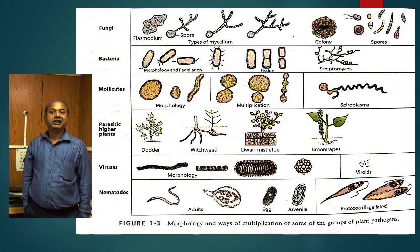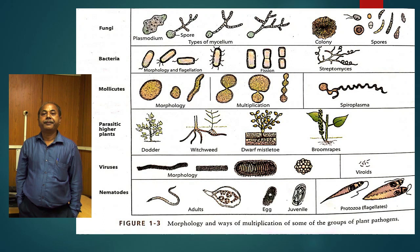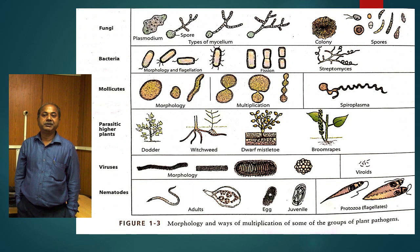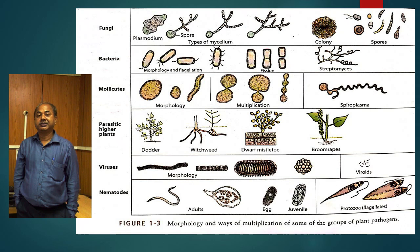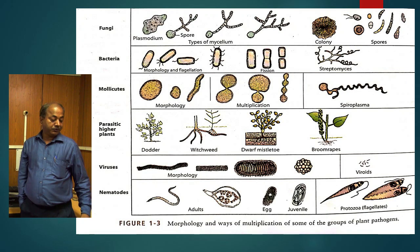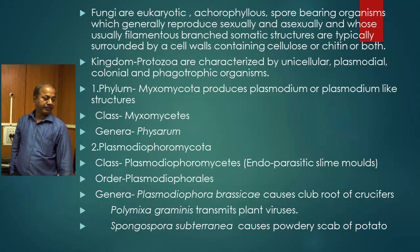Viruses come under the borderline case in the range of living and non-living. Viruses also cause many kinds of disease in plants, producing yellowing-type symptoms. Then nematodes are the active parasites which cause injury to plants and make secondary parasites invade the plants. These are the broad classifications of pathogens which we will discuss one by one.